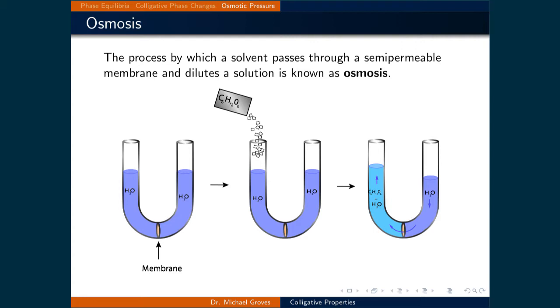The diagram below shows a U-shaped container where sugar is added to one side, and as a result, the water moves to the side with the sugar. The important part of the U-shaped container which makes this possible is the semi-permeable membrane.